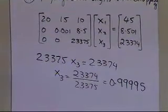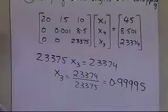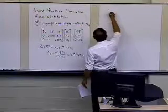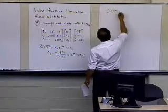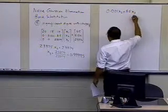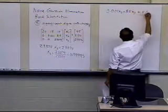So now let's go and take this number and find out what x2 we get. So the second-to-last equation which we have is 0.001 x2 plus 8.5 x3 is equal to 8.501.